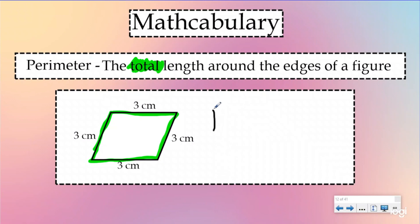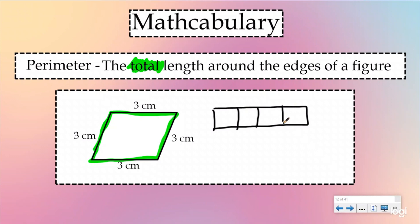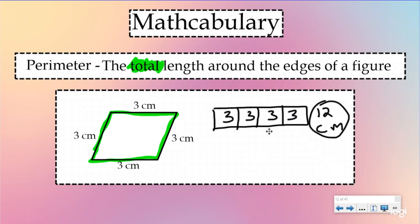Yesterday we did that using a visual model. Instead of writing an addition equation with 3 plus 3 plus 3 plus 3, we put our add-ins inside our part-whole model and our sum was the total. So I have four equal groups of 3, and when you do 3 plus 3 plus 3 plus 3, you get a total of 12 centimeters. So my perimeter for this rhombus would be 12 centimeters. That's what we did yesterday.